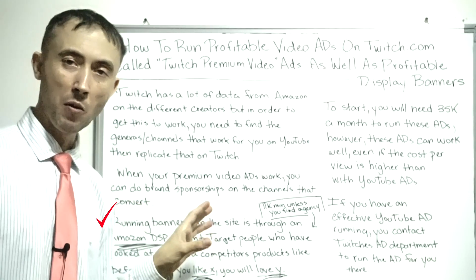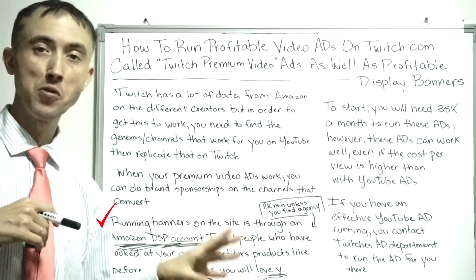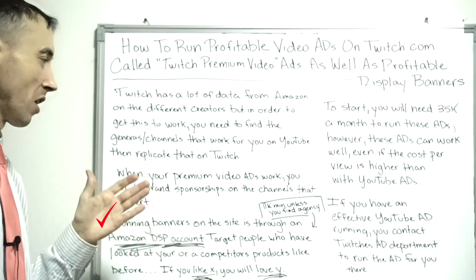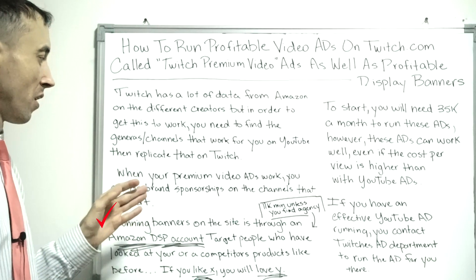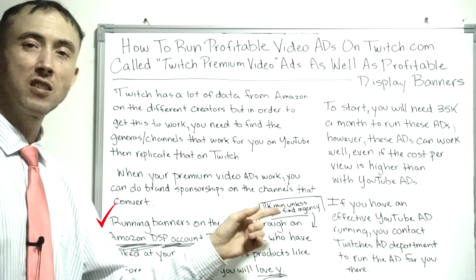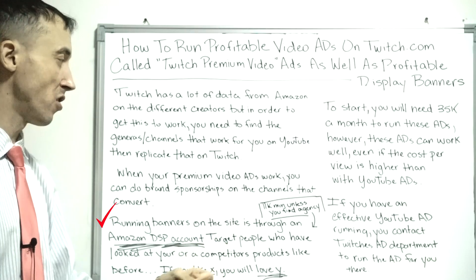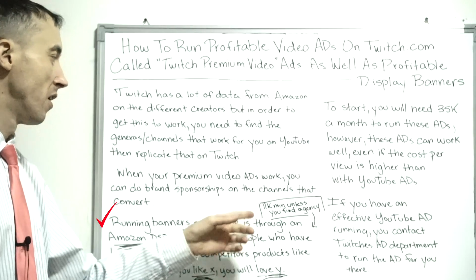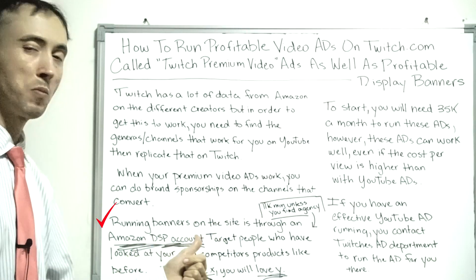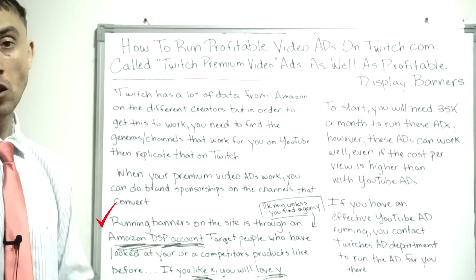That's the funnel I'd use on Twitch starting out — the tried and true approach. On the Amazon DSP, if you're doing it yourself through their self-serve platform without using Amazon staff to manage the ads — which you don't want — you need to spend at least $11,000 a month to run banner ads on Amazon DSP to get them onto twitch.com.